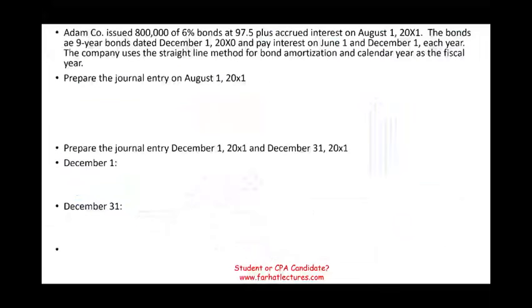So let's take a look at this exercise. Adam issued $800,000, 6% bonds at 97.5 plus accrued interest on August 1st, 2001. This is when we issued the bond. August 1st — $800,000 is the face value, it's paying 6%, and it was issued at 97.5, so obviously it was issued at a discount. And we issued it plus accrued interest. Once we say accrued interest, it means the bond was not issued at its initial date.